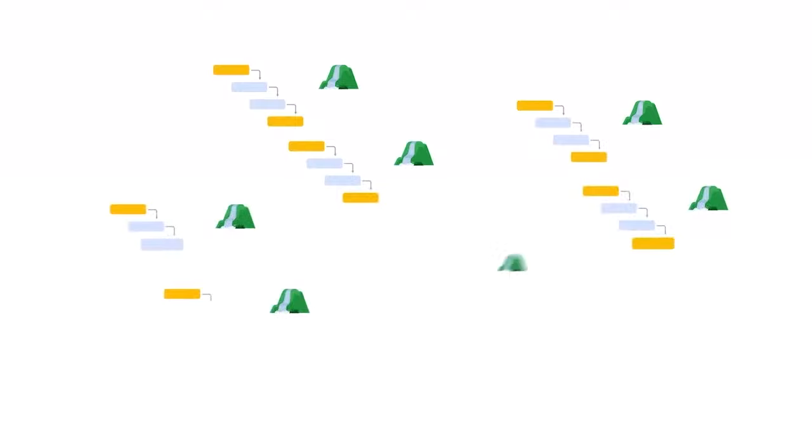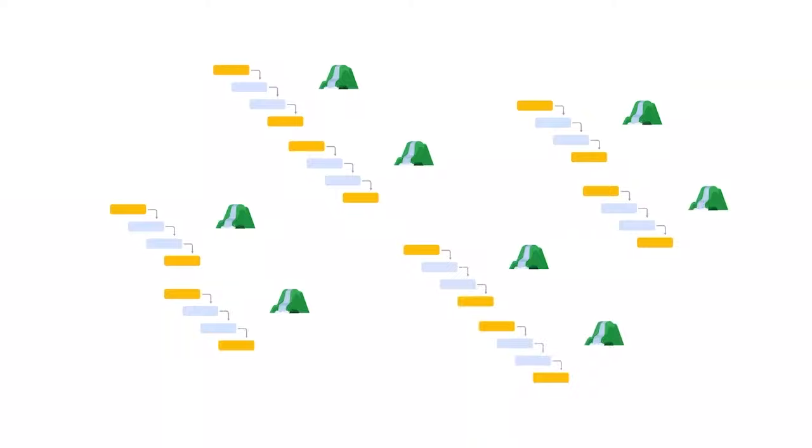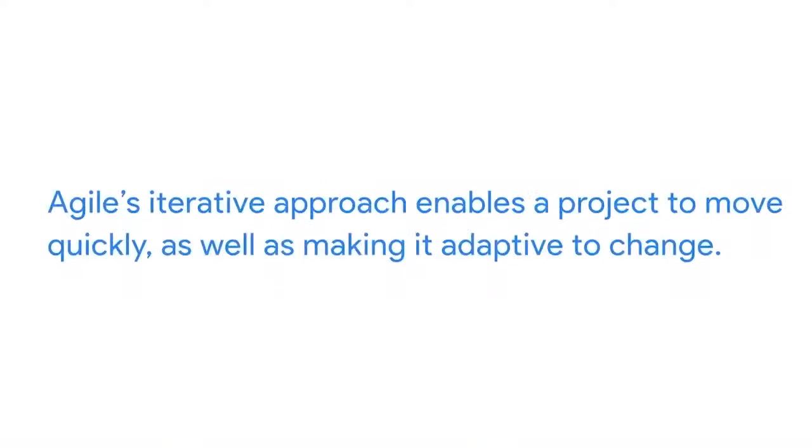In this case, the team operates within many shorter blocks of time called iterations. Individual iterations might get repeated depending on the feedback received. During each iteration, the team takes a subset of all the project's activities and does all the work required to complete that subset. You can think of it as a lot of mini waterfalls for each activity. This iterative approach enables the project to move quickly, as well as making it much more adaptive to change. So the term Agile means flexibility, repetition, and openness to change.